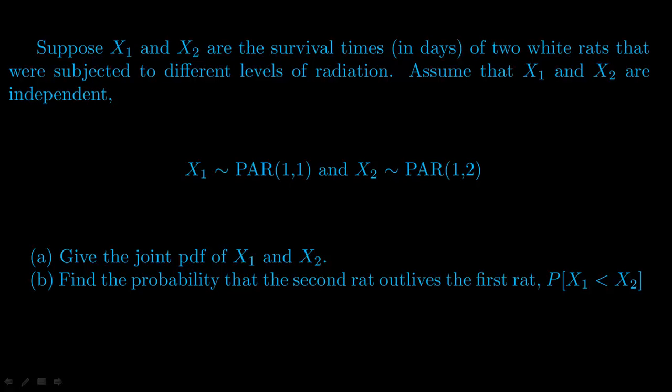This is a textbook problem with two continuous random variables X1 and X2, representing the survival times of two white rats subjected to different levels of radiation. X1 and X2 are independent, which means once you find the pdf of X1 and X2, to find the joint pdf all you have to do is multiply them together.